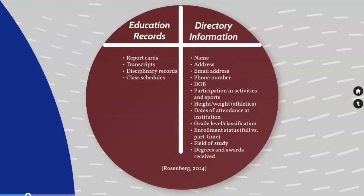Directory information, on the other hand, includes things like the student's name, address, email address, phone number, date of birth, and information about students' participation in activities and sports, which can actually include their height and weight. Also included are dates of attendance at the specific school or institution, grade level or classification, enrollment status, field of study, and degrees or awards received.